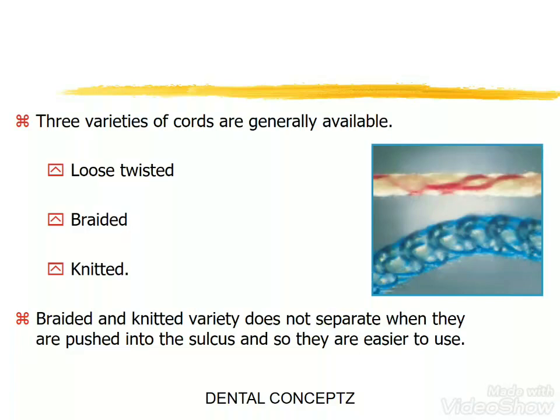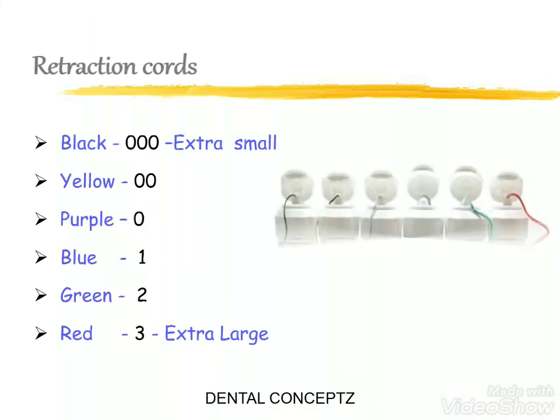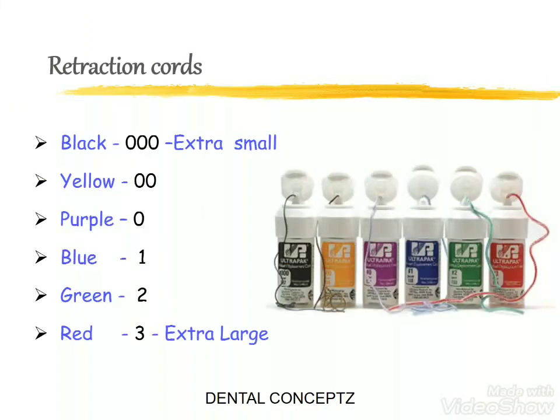Retraction cords are available in different sizes, starting from triple zero which is extra small, to size three which is extra large, and these retraction cords are color coded.